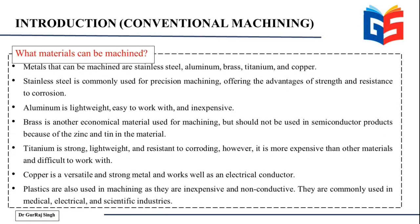Now focusing on what metals can be machined — there are different metals available in the industry used for making different components. The most commonly used ones are steel, aluminum, brass, titanium, copper, etc. Stainless steel is used for precision machining, offering the advantages of strength and resistance to corrosion. Aluminum is inexpensive because it is abundantly available, light in weight, easy to work with, and offers better machinability.